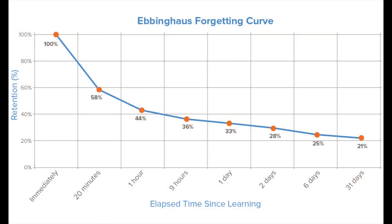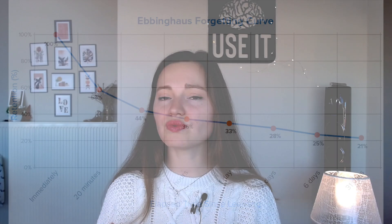What does the forgetting curve show? In fact, it shows how information is lost if there is no attempt to retain it later. And if there is no or minor exposure to this information, the chances that we forget this information are relatively higher. Generally, people forget about 60% of information that they consume. But we can do something about that — and by saying so, I mean exposure.